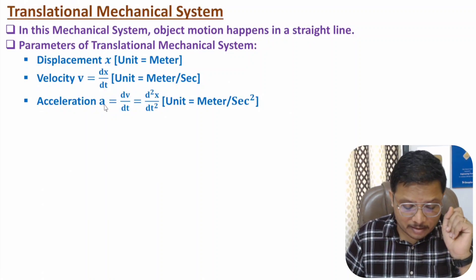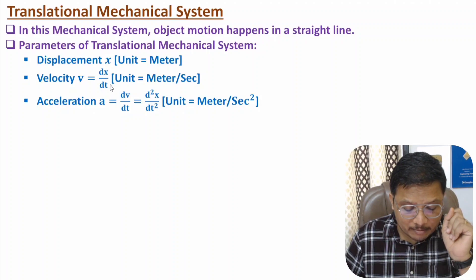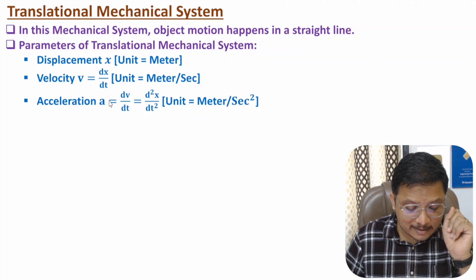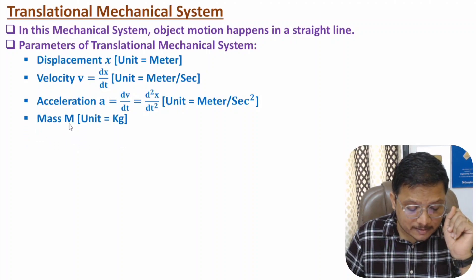The third parameter is acceleration. Acceleration is the rate of change of velocity with respect to time. Since velocity is the rate of change of displacement, acceleration is the double differentiation of displacement with respect to time. The unit of acceleration is meter per second square.